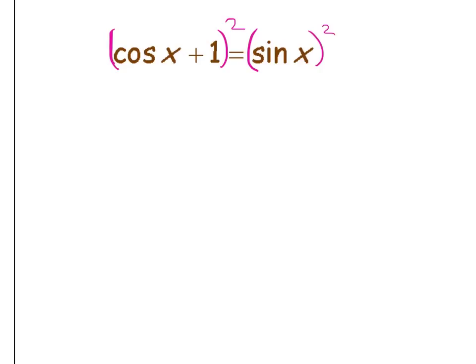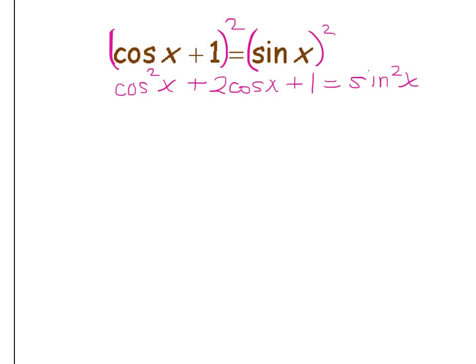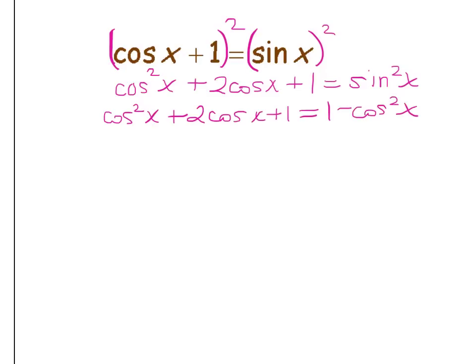Squaring the left-hand side — which is a binomial — gives cosine squared x plus two cosine x plus one. On the right-hand side, this equals sine squared x. Since we have two cosines on the left and one sine on the right, it makes sense to change sine squared to something related to cosine. So I rewrite this as cosine squared x plus two cosine x plus one equals one minus cosine squared x.